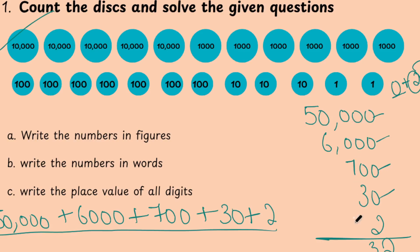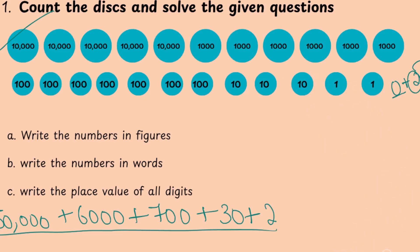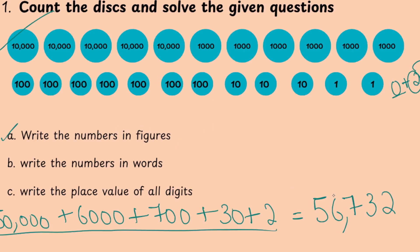Here, 3. Here we have 7. Here, 6. Then 5. So the answer is 5, 6, 7, 3, 2 — which means 56,732. What is the first question we were asked? Write the numbers in figures. The number we got is 56,732, so that is what we write as the number in figures.